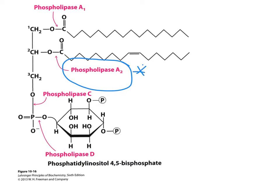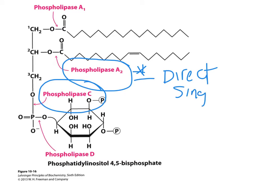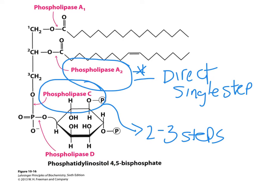Phospholipase A2 directly cleaves arachidonic acid in a single step. In contrast, phospholipase C requires an additional 1 to 2 lipases, involving 2 to 3 steps to release the arachidonic acid. We're going to focus primarily on phospholipase A2.